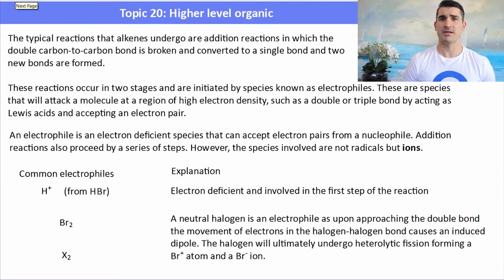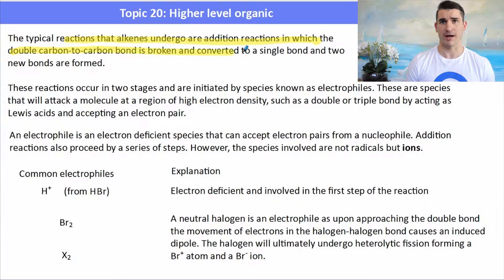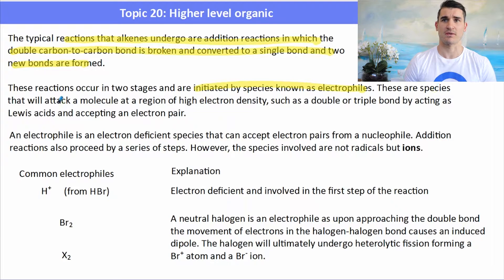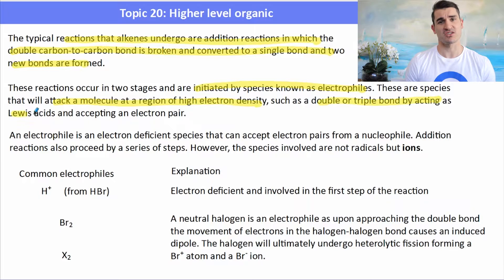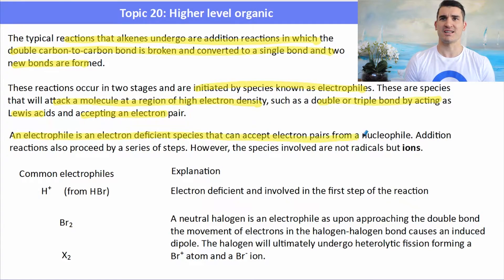An alkene typically undergoes an addition reaction — that's where the double carbon-to-carbon bond breaks. These reactions occur in two stages and are initiated by species called electrophiles. An electrophile can attack a region of high electron density such as a double or triple carbon-to-carbon bond. The definition of an electrophile is an electron-deficient species that can accept a pair of electrons from a nucleophile.